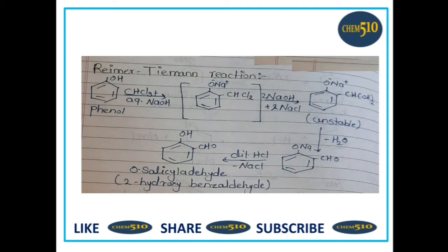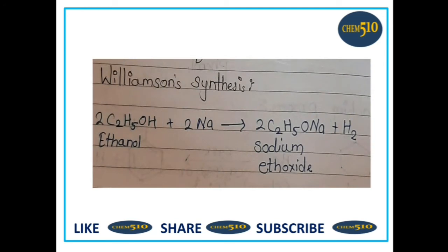Then Reimer-Tiemann reaction. This reaction was discovered by Karl Reimer and Ferdinand Tiemann. It is a chemical reaction used for ortho-formylation of phenol. A simple example is the conversion of phenol into salicylaldehyde — you can see here phenol is converted into ortho-salicylaldehyde. So it is a simple example of the Reimer-Tiemann reaction.